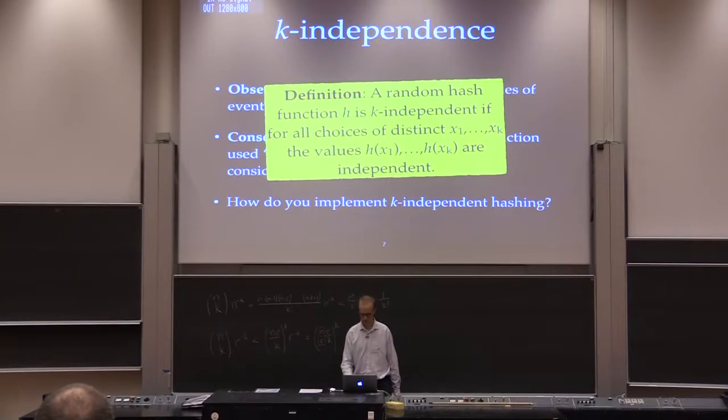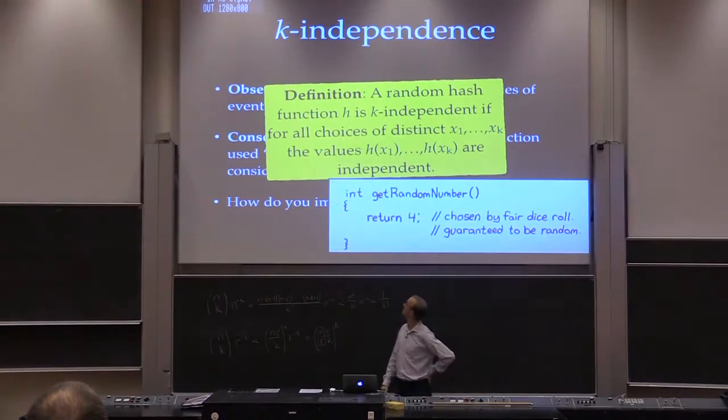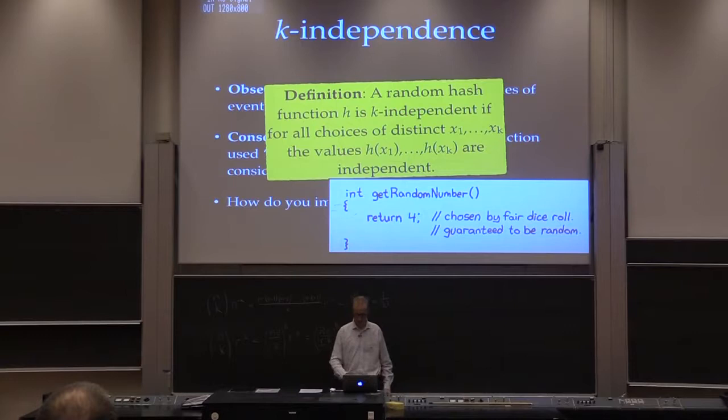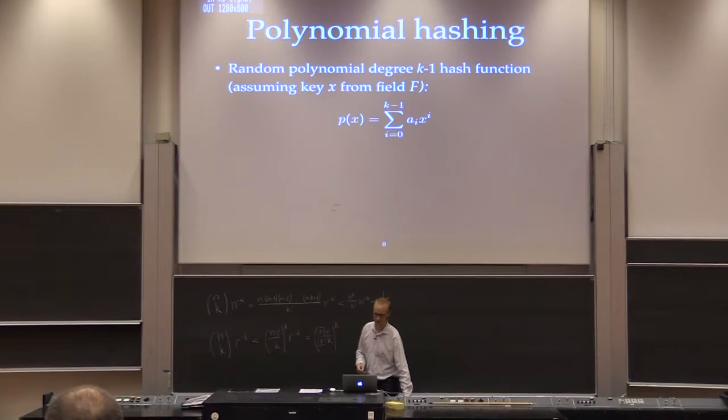What's an easy implementation of 1-independence? Any idea? Any xkcd readers around? This is 1-independence: it's a constant hash function that is constantly equal to a randomly chosen number. So 1-independence is easy. How do you get more than 1-independence? One answer is to use polynomial hashing.